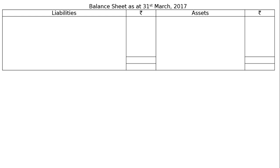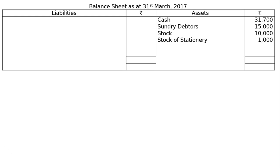Balance sheet as at 31st March 2017. Cash Rs 31,700 — amounts brought in by cash in capital account will be added, amounts paid out by cash will be deducted, premium for goodwill will be added, cash withdrawn will be deducted. Creditors Rs 15,000. Stock Rs 10,000. Stock of stationery will now come in the balance sheet as Rs 1,000 — increase in stock. Typewriter is reduced by Rs 1,000, so Rs 4,000. Fixed assets reduced by 10%, that is Rs 1,23,300. Asset side total Rs 1,85,000.